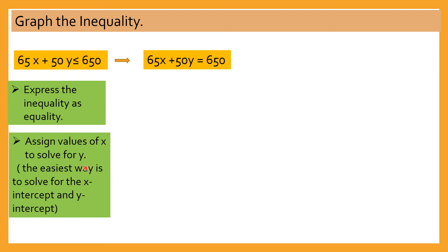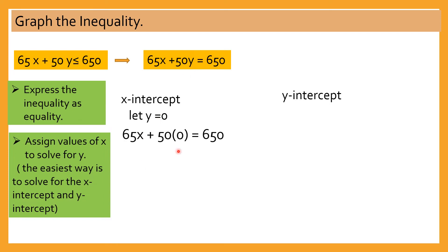The easiest way is to solve for the x-intercept and the y-intercept. Mas madaling i-graph pag insolve natin yung x and the y-intercept. To solve for the x-intercept, we let y equal to 0 — which means we substitute y there with 0. So we have 65x plus 50 times 0 is equal to 650.